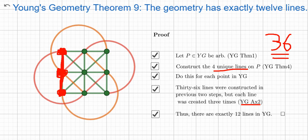Well, 36 divided by 3 is 12. Now these are exact, so this is exactly 12 lines in Young's geometry.